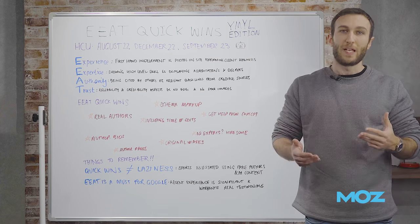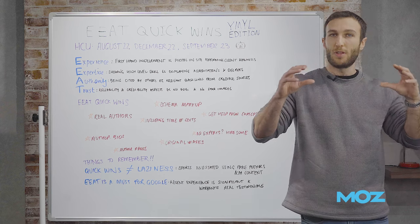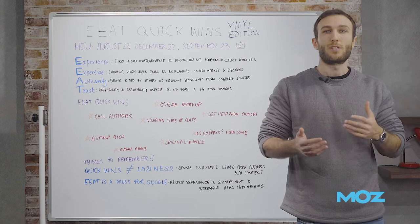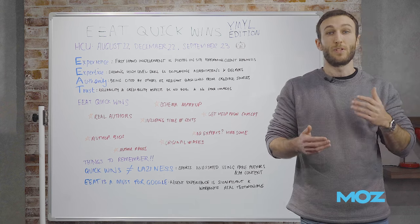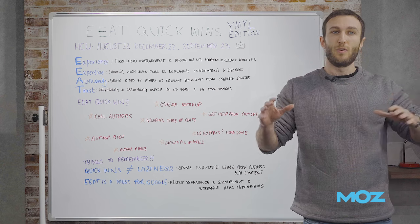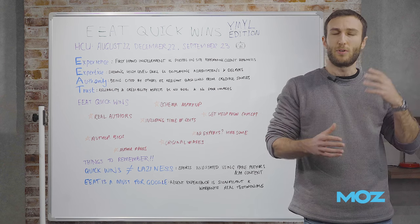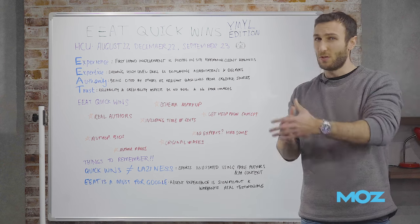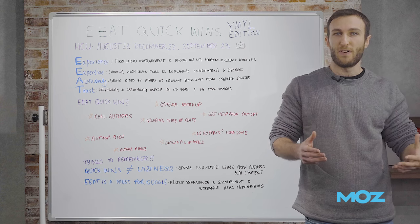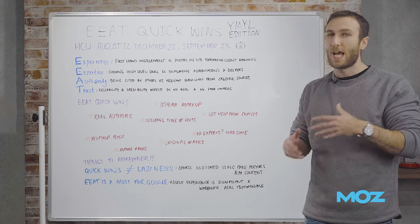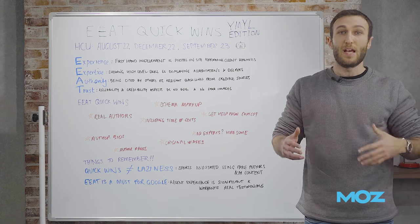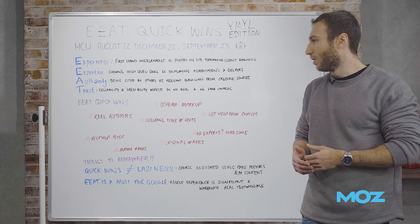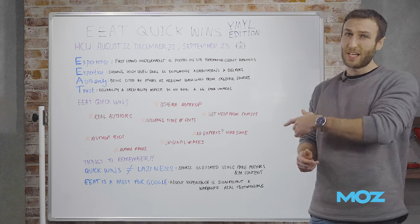Third is author pages. Once you've got your authors and their bios, have an author page directly linked to that author that specifies everything about their experience and credibility. You can link out to other content they've written and their social media profiles. That's another way to boost EEAT, and it's something users and Google love to see.